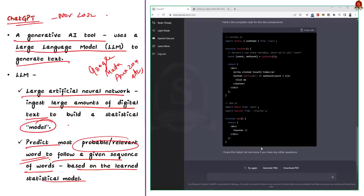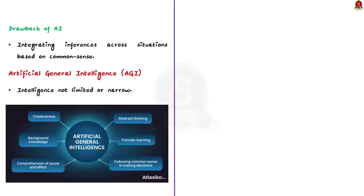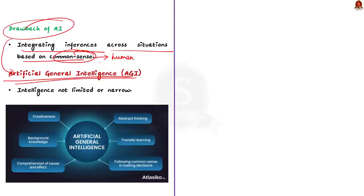Even though AI have such huge advantages, they are weak in integrating inferences across situations based on the common sense that humans have. We all know that common sense will make a human save his life in a life-threatening situation. But, we cannot expect that in an AI. Luckily, this drawback can be addressed by another technology called Artificial General Intelligence. Artificial General Intelligence have intelligence that is not limited or narrow. Think of a mission having humans common sense that is what AGI is. But, there are no credible efforts towards building AGI yet. Many experts believe AGI as the future.